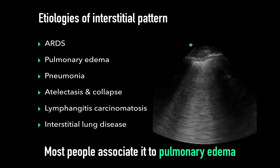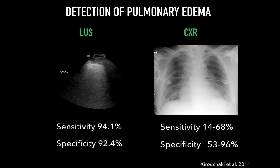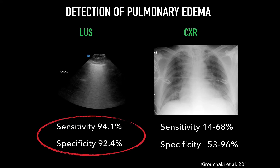Most people associate the interstitial pattern of lung ultrasound with pulmonary edema, but there are countless etiologies associated with it, notably ARDS and interstitial lung disease. This is close to what chest X-ray and CT often report as interstitial-type syndromes. In the appropriate context, however, lung ultrasound far outperforms chest X-ray, such as in pulmonary edema, where the presence of acute bilateral diffuse lines is highly predictive.